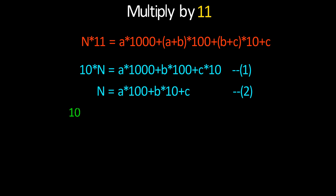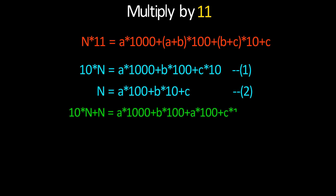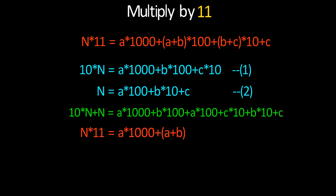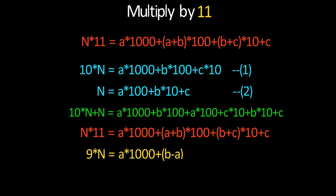After adding both equations we get 10n plus n, which equals a times 1000 plus (a plus b) times 100 plus (b plus c) times 10 plus c, giving our answer. When we subtract both equations we get 9 times n, equal to a times 1000 plus (b minus a) times 100 plus (c minus b) times 10 minus c.